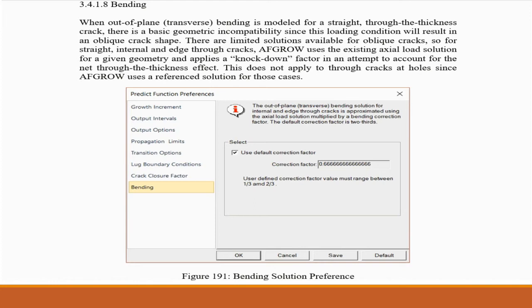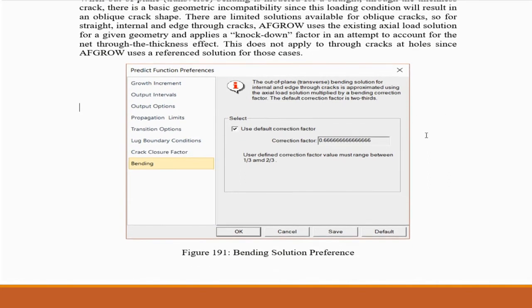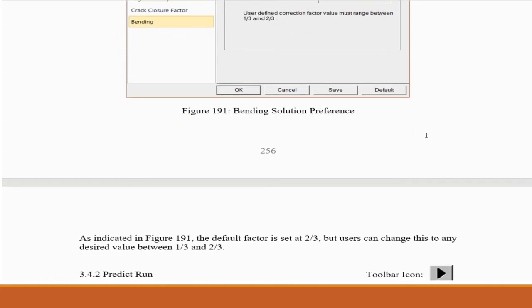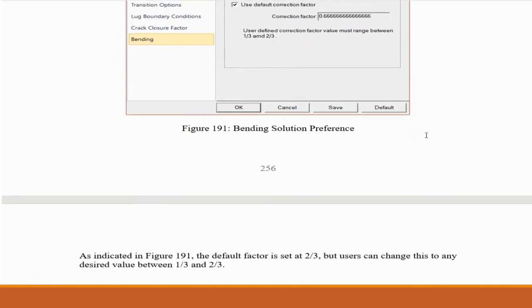As you can see, the default factor is two thirds. But AFGRO now allows users to change the factor between one third and two thirds.